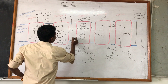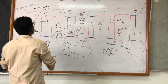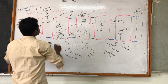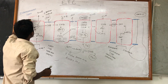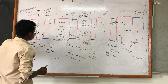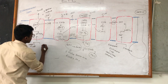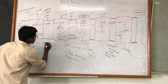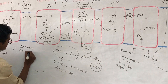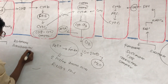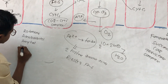There are certain inhibitors that inhibit the transfer of electrons from various complexes. The inhibitors that inhibit complex 1 are rotenone, amobarbital (amytal), and pyridine.